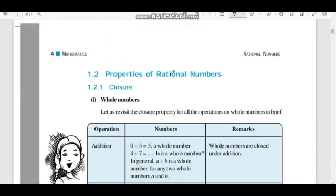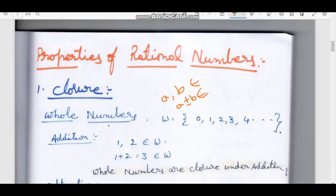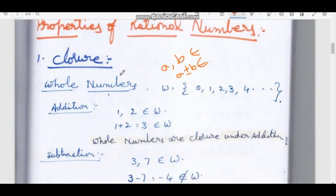Properties of Rational Numbers — Closure Property. Whole numbers: the set of whole numbers is 0, 1, 2, 3, 4, and so on. This is very useful to understand.